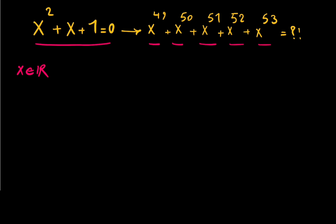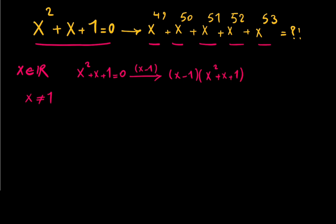What can we do? Starting from x squared plus x plus 1 equals 0, assume x is not equal to 1 — because plugging in 1 gives 3, not 0 — so we can safely multiply by (x minus 1). This gives (x minus 1)(x squared plus x plus 1) equals 0, which means x cubed minus 1 equals 0, so x cubed equals 1. That's really nice!